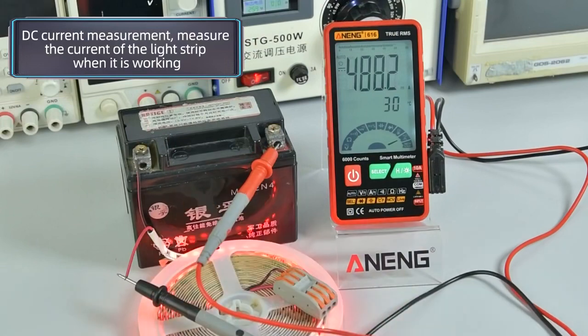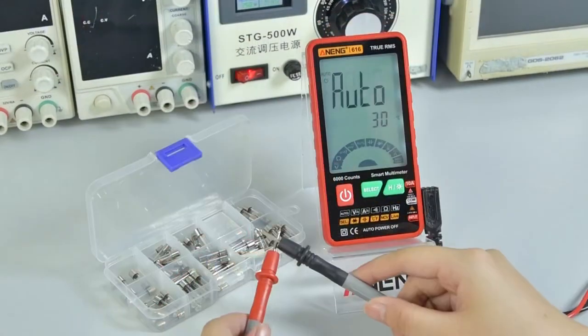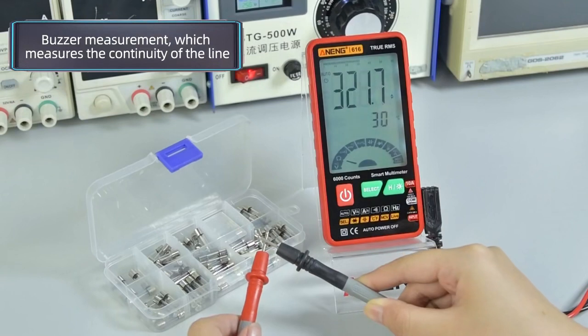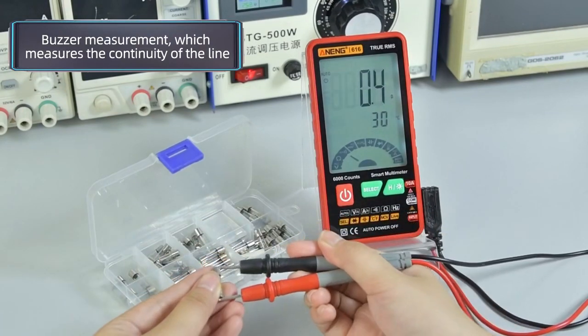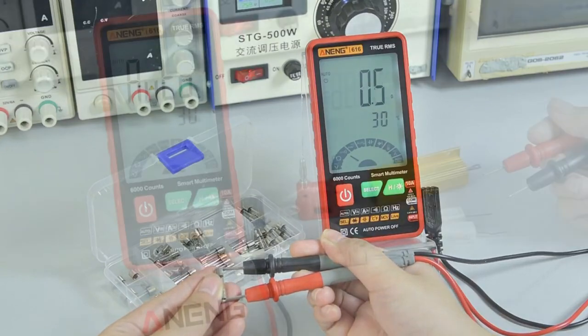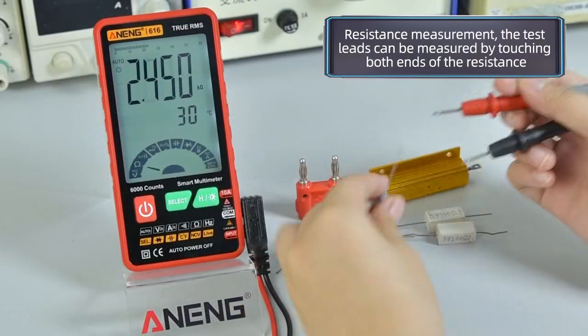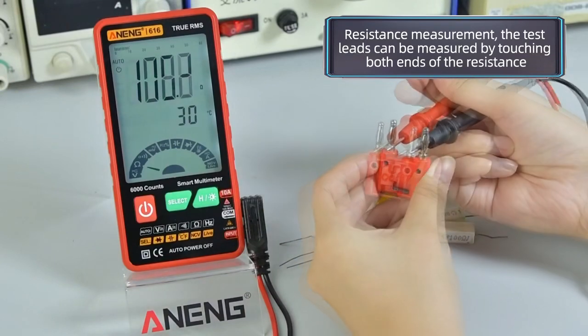Measure the current of the light strip when it is working. Buzzer measurement, which measures the continuity of the line, will beep. Resistance measurement: the test leads can be measured by touching both ends of the resistance.